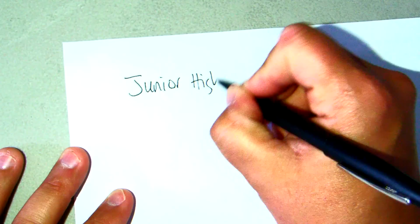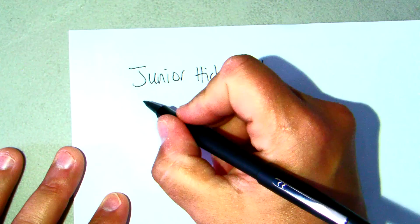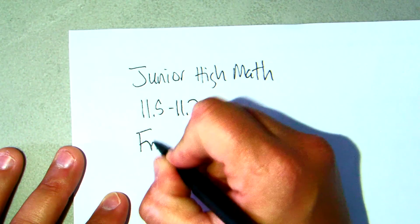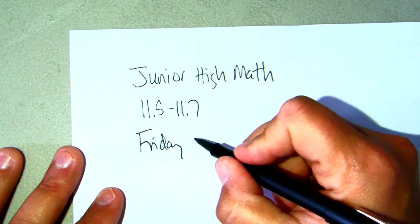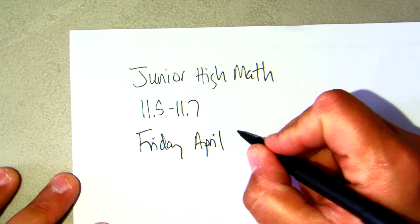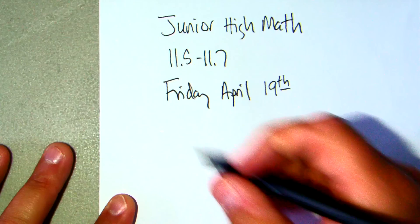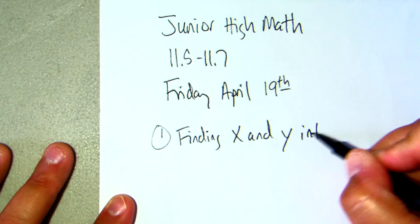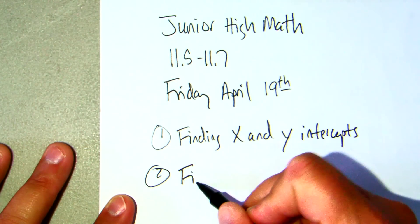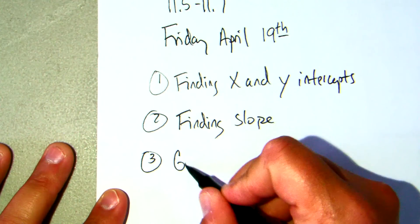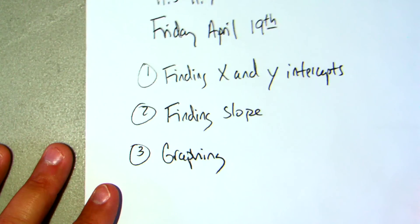This is junior high math and this review will cover sections 11.5 through 11.7. The test is on Friday, April 19th. The only things covered on the test will be finding x and y intercepts, finding slope, and graphing — just three sections.